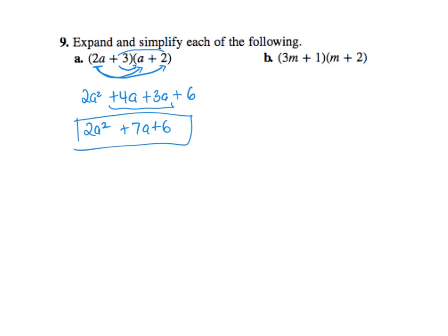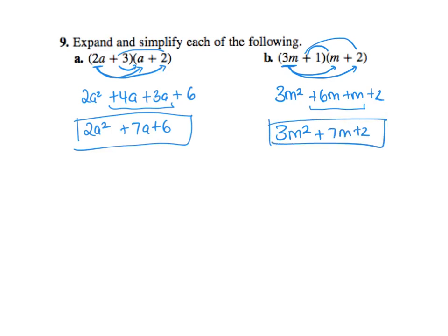So just be careful when you've got the numbers, make sure you're still accounting them. So three m times m, three m squared. Three m times two would be six m. Then one times m, m. Then one times two is two. These guys are like terms so three m squared plus seven m plus two. Good, beautiful.